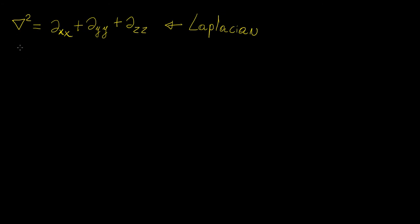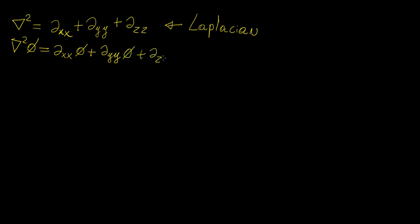The way this works is as follows. You apply this to some scalar function phi, and basically you just add up the second derivatives of that scalar function. So you're going to have the second partial derivative of phi with respect to x, plus the second partial with respect to y, plus the second partial with respect to z. Those are the second derivatives with respect to each of those variables.